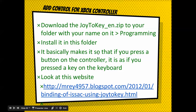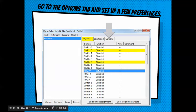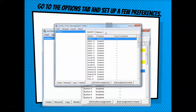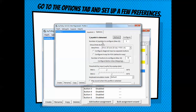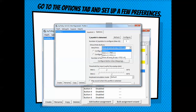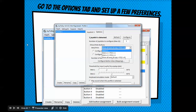First thing: download Joy2Key to your folder, put it in your folder with your name on it, unzip it, and install it. It basically makes it so that if you press a button on the Xbox controller, it is as if you pressed a key on the keyboard. You can look at the website for more help, but I'll probably help you figure it out. Go to the Options tab and set up a few preferences. If you want to use two joysticks, you can.